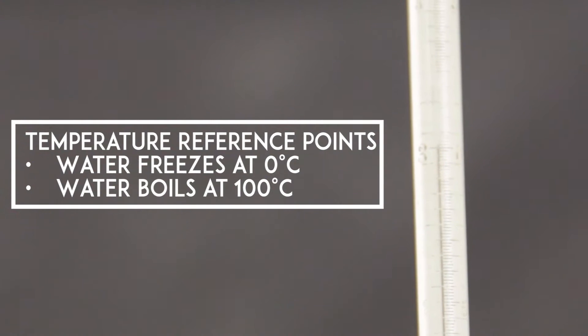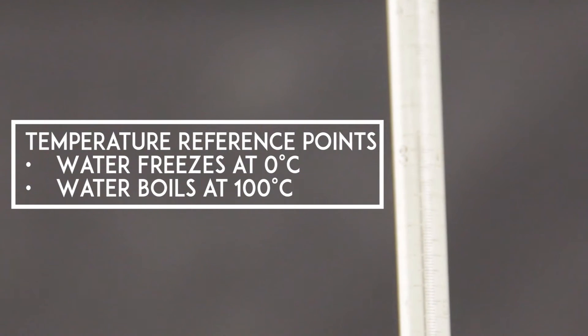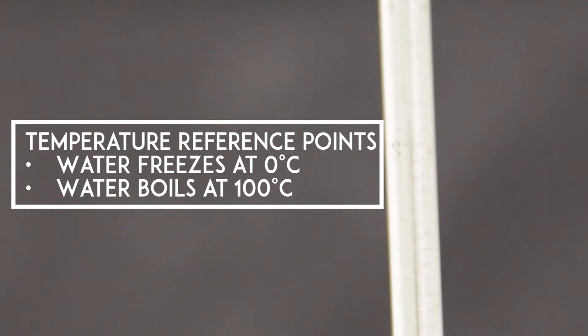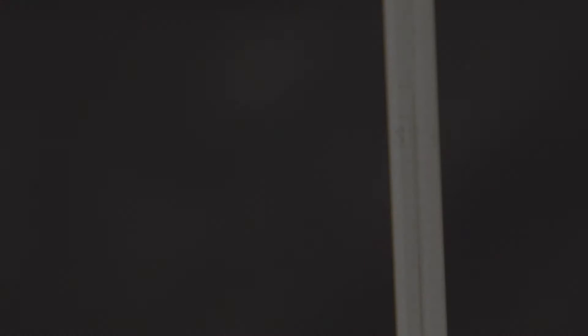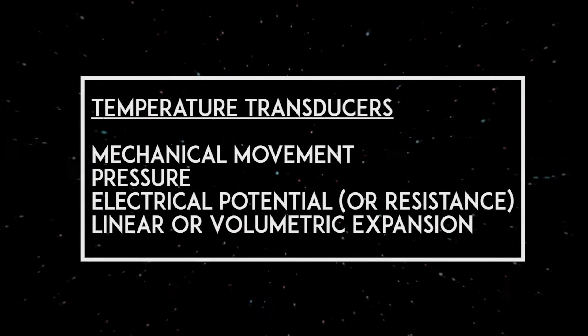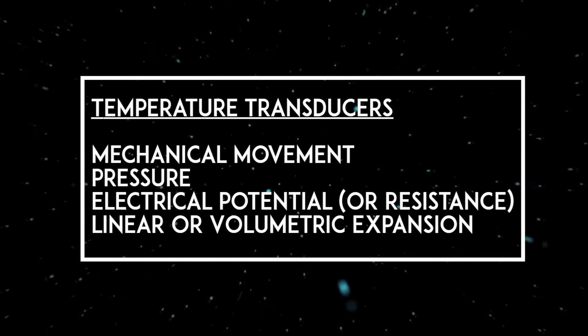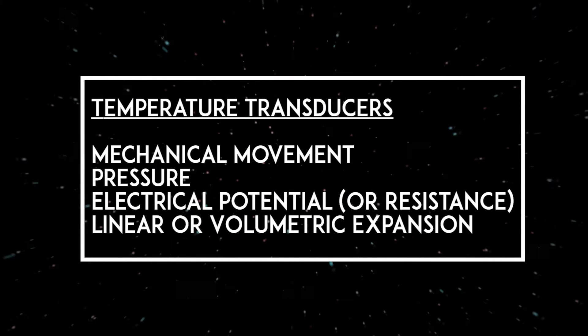One first must calibrate the temperature scale, the values of the transducer at certain known temperatures. For example, the volumes of the mercury at the temperatures at which water freezes, 0 degrees Celsius, and water boils, 100 degrees Celsius, at sea-level atmospheric pressure, are reference points used to establish the scale markings on the side of a thermometer. Here is an abbreviated list of transducers that can be used to measure temperature.